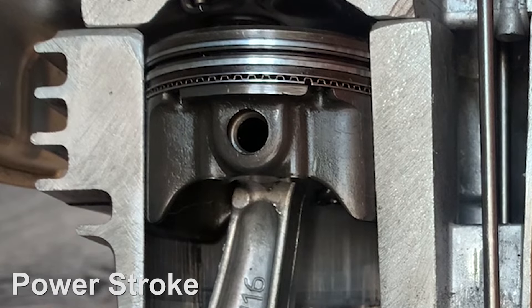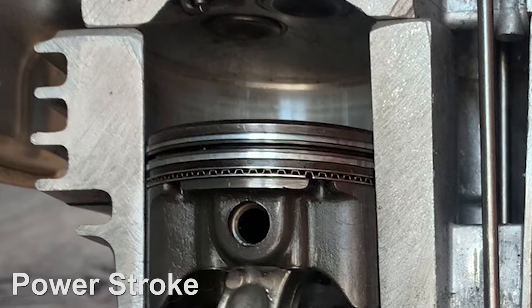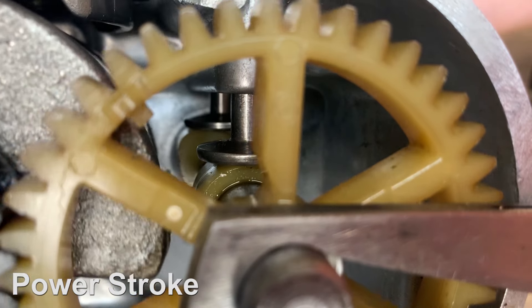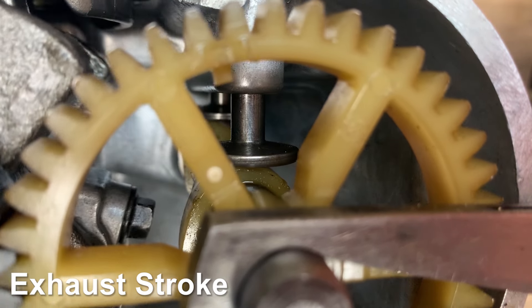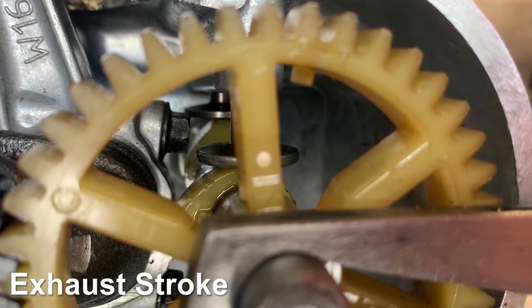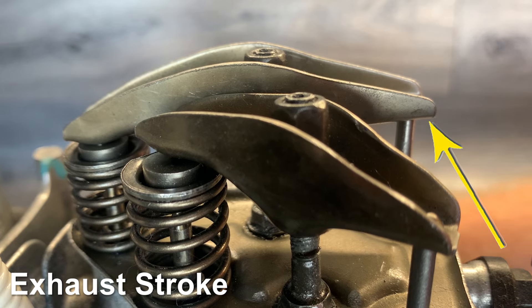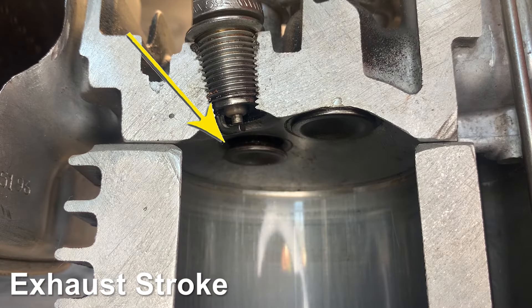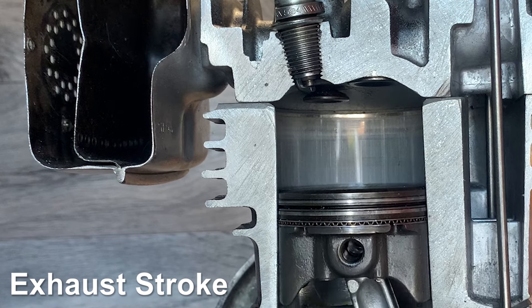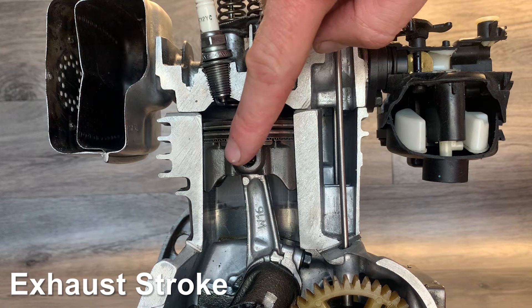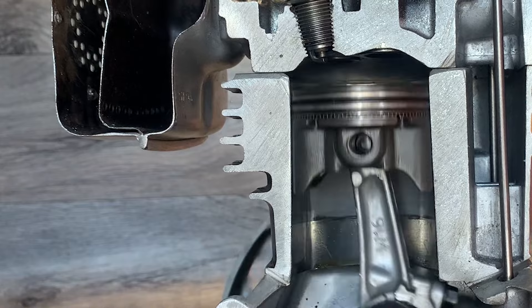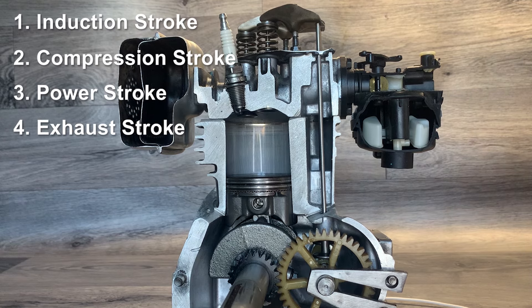Combustion has occurred and the piston has been forced back down in the power stroke. In time with the turning of the crankshaft, the high point of the cam at the back pushes the cam follower upwards to open the exhaust valve. The rising of the piston then pushes out all of the exhaust gases through the exhaust valve and out through the exhaust. And of course the cycle just continues — that's why this is called a four-stroke or four-cycle engine.